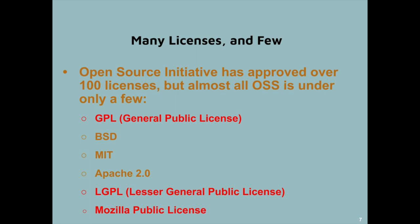Now let's talk about the kinds of open-source licenses you might choose. You might have heard that there are lots of open-source licenses, too many to understand. That's not exactly right. The Open Source Initiative, or OSI, is the organization that reviews licenses to certify that they are open-source licenses, which means they meet the open-source definition. The OSI has approved over 100 licenses, but most of them are rarely used. The six licenses listed on this slide are the top licenses used, and almost all open-source software — probably over 99% — is one of these licenses. The ones in red are copyleft licenses.